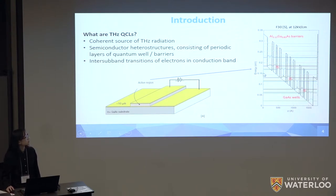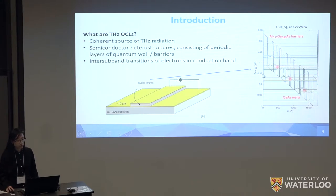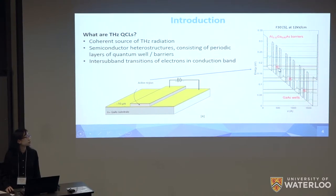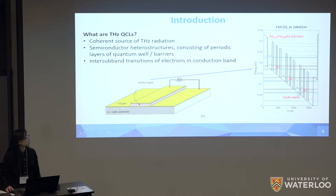Here I show one example called F30, which is the design we're going with in our project. The barriers consist of Al₀.₁₅Ga₀.₈₅As and the wells consist of GaAs. In this design, electrons start from one state and tunnel into the upper lasing state, followed by a radiative transition emitting a photon. The lower lasing state is then quickly depopulated by resonant tunneling and LO-phonon emission, and this process is repeated for every module.